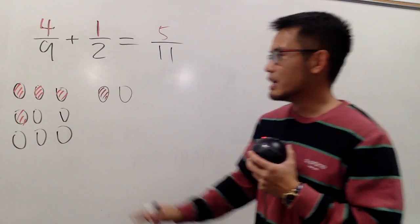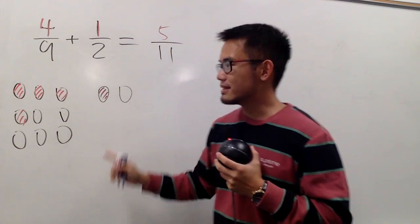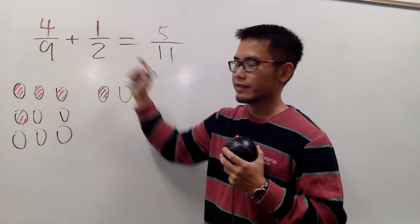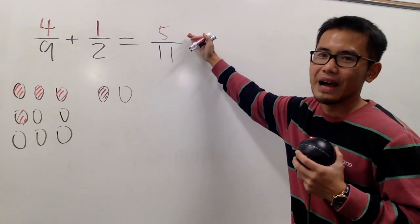And once again, do you guys agree that this is a way to represent 4 over 9? And likewise, this is a way to represent 1 over 2. And when you put them together, the final answer seems to be 5 over 11.